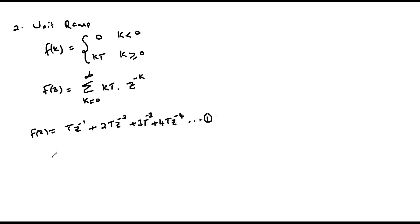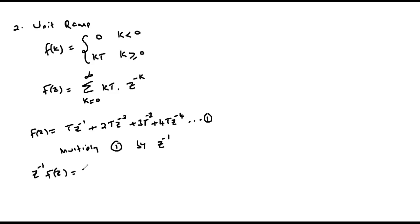If we take equation one and multiply it by z to the power minus one, the equation becomes: on the left-hand side we get z to the power minus one times F of z, equal to T z to the power minus two, plus two T z to the power minus three, plus three T z to the power minus four, plus four T z to the power minus five. Call this equation two.